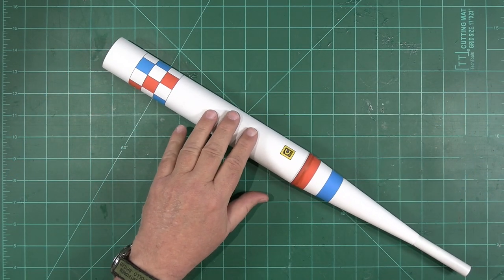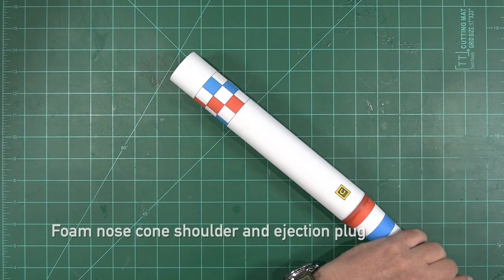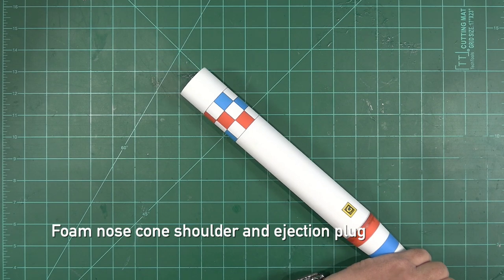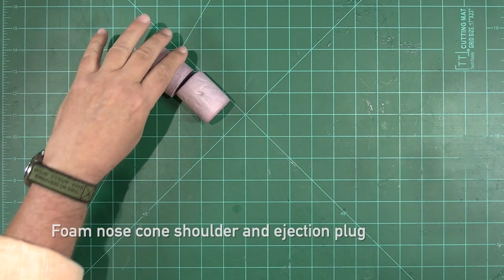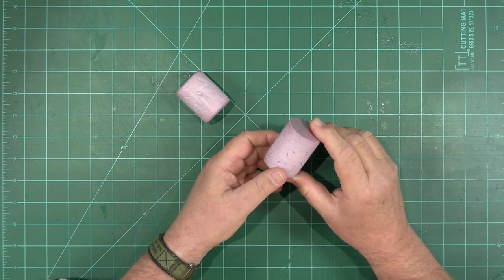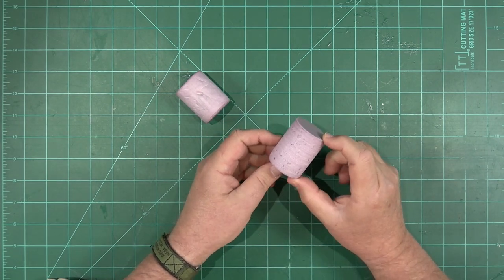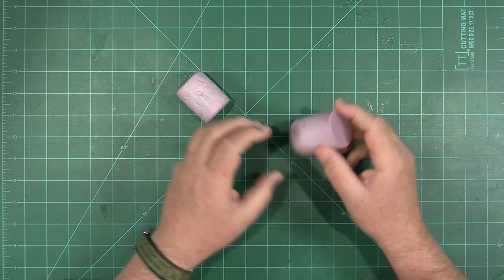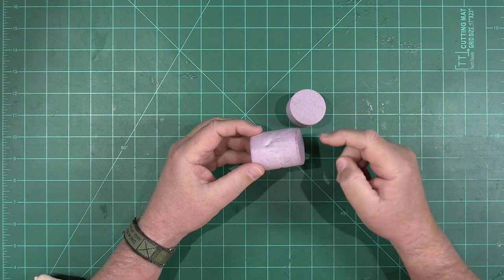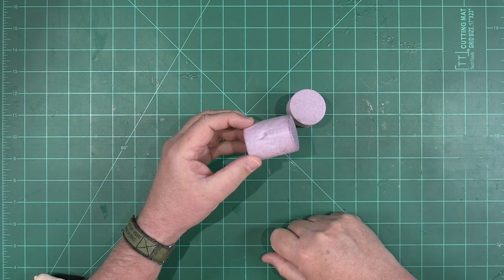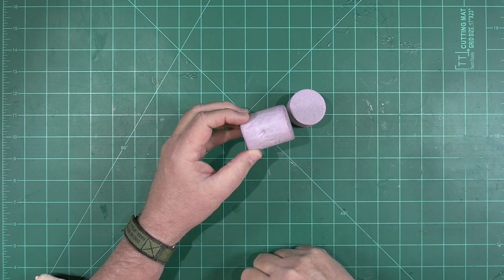Now also packaged inside this airframe tube are a couple of foam plugs. I'm going to use a dowel to push them out. The foam plugs are used as essentially an ejection piston for the parachute and streamer variants of these models, and they're also used as the nose cone shoulder. We're going to epoxy one of these in place as a nose cone shoulder. We may make it a little bit shorter before we do that though.